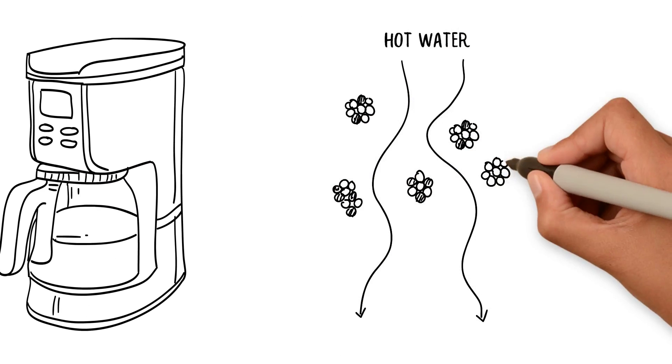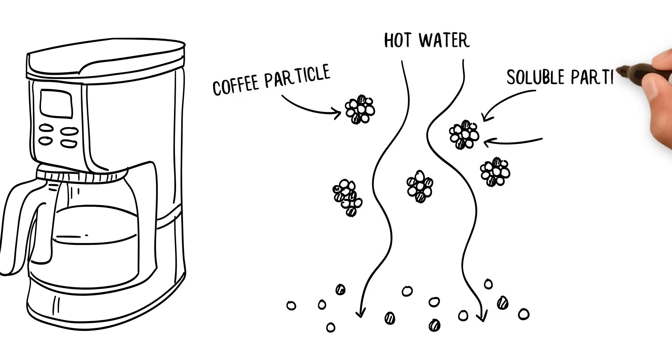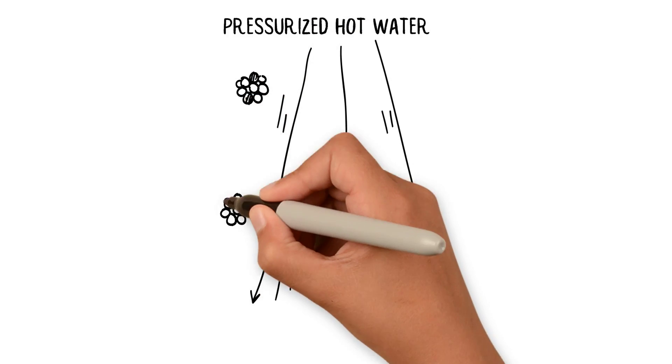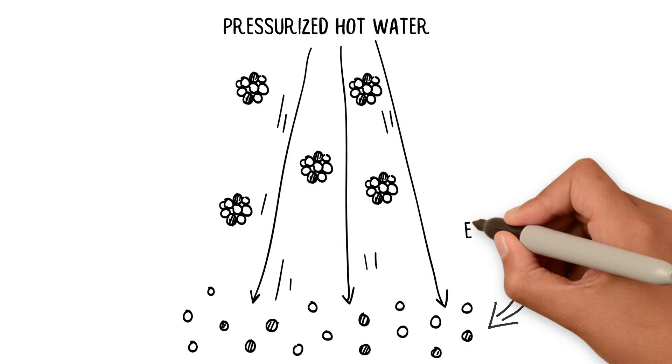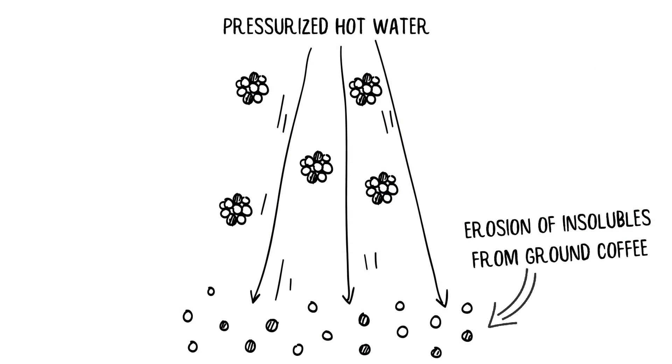Most brewing methods lack pressure and leave all the important insolubles out of the cup. As pressurized hot water passes through coffee, the grounds are eroded. More erosion means more tasty insolubles in the cup, resulting in a richer coffee.